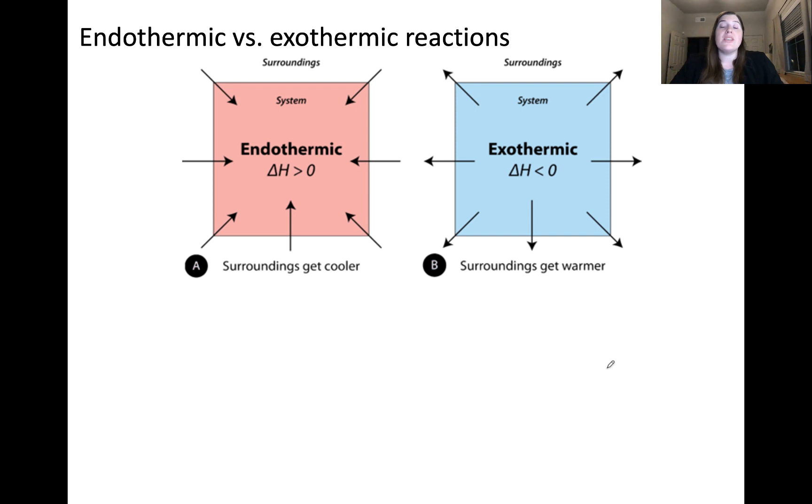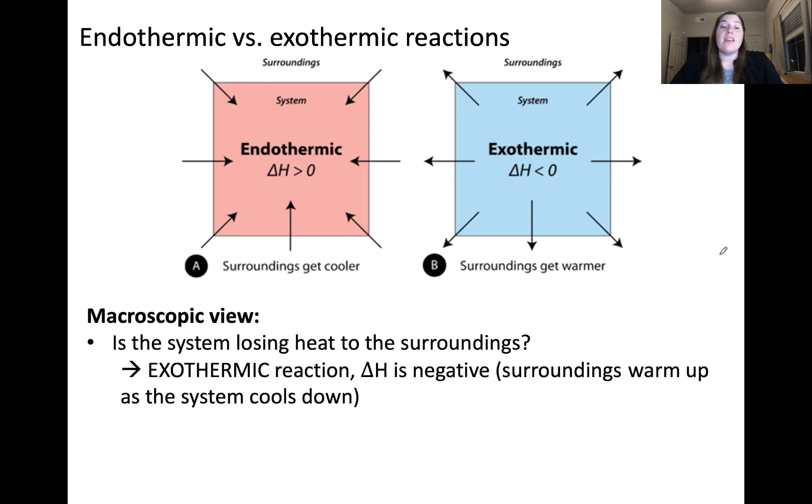Looking at these diagrams, we see the system indicated by the colorful square and the surroundings outside. In the case of the blue box, this is an exothermic reaction. This occurs when the system is losing heat to the surroundings. This is indicated by the arrows pointing from the system out to the surroundings. An exothermic process results in a negative change in enthalpy. In other words, since enthalpy is heat at constant pressure, the surroundings are warming up while the system is cooling down. This happens in the instance of sitting in front of a fire or a combustion reaction. The wood is combusted, which causes the system, the wood burning, to release heat to the surroundings. This is felt by your hand when you hold your hand near a fire.